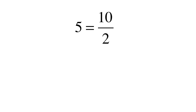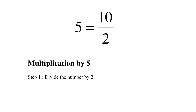Let's begin by looking at multiplication by 5. 5 can be written as 10 upon 2, so multiplication by 5 can be viewed as multiplying by 10 and dividing by 2. Multiplication by 5 involves two very easy steps: in the first step, we divide the number by 2, and in the next step, we multiply the answer by 10.